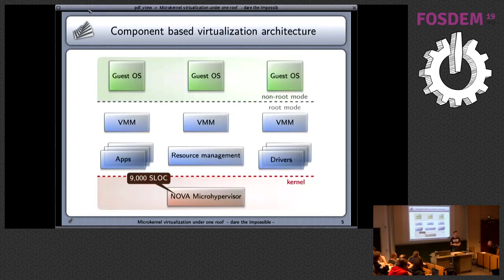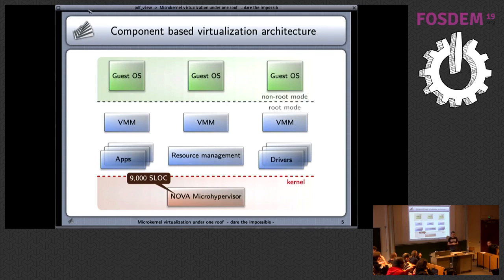How does such an architecture look in principle? I took Nova here as an example — you can replace it with other kernels in theory. First, you need a microkernel which is quite tiny, and which also has features to run as a hypervisor. On top you need some user-level environment where your drivers run, well-protected from each other in their own protection domains, along with native applications and resource management. For this talk, relevant is that you have a virtual machine monitor together with a hypervisor to drive your unmodified guest operating system.